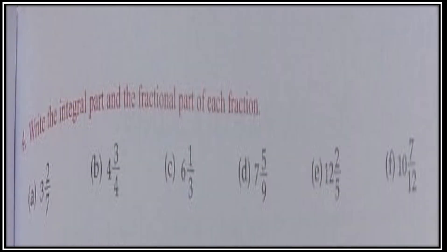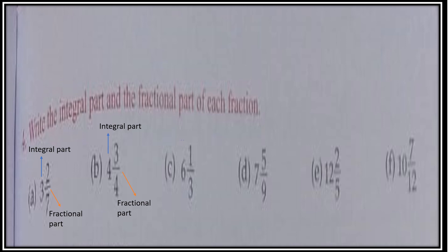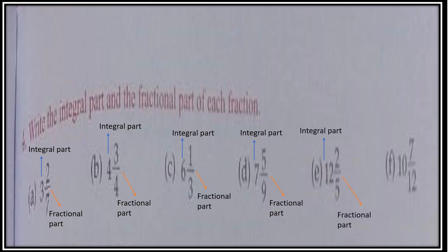Now write the integral part and the fractional part of each fraction. All questions are written in mixed fraction form. Part A: 3 is integral part, 2 upon 7 is fractional part. Part B: 4 is integral part, 3 upon 4 is fractional part. Part C: 6 is integral part, 1 by 3 is fractional part. Part D: 7 is integral part, 5 upon 9 is fractional part. Part E: 12 is integral part, 2 upon 5 is fractional part. Part F: 10 is integral part, 7 upon 12 is fractional part.